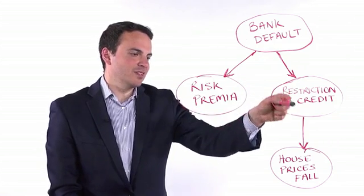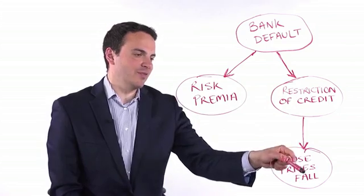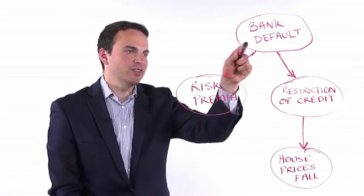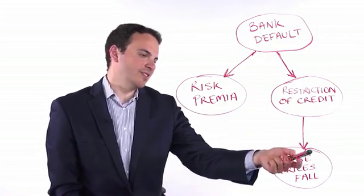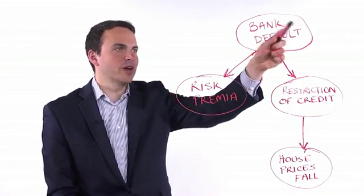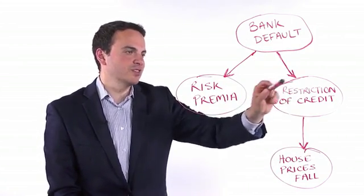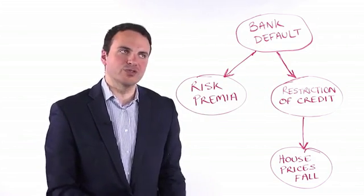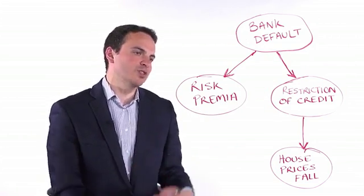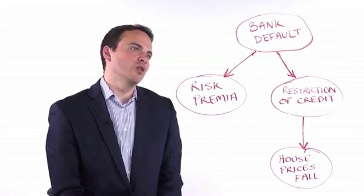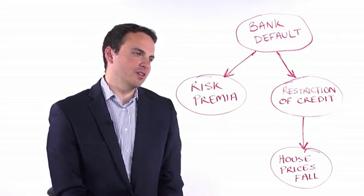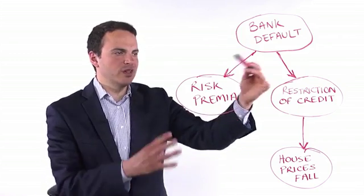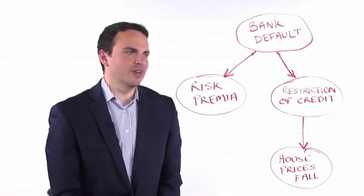You see that each event can cause another event, but we don't have arrows connecting all the events. This means that, for example, house prices fall is screened from bank default through the restriction of credit to the economy. So you see this is not just a question of measuring correlation between variables, this is understanding how variables interact in a causal manner.